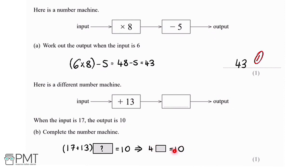And if we have a think, how can we get from 4 to 10? We can add 6, because 6 plus 4 is equal to 10. So completing the number machine up here, we're going to have add 6, giving us our second mark.